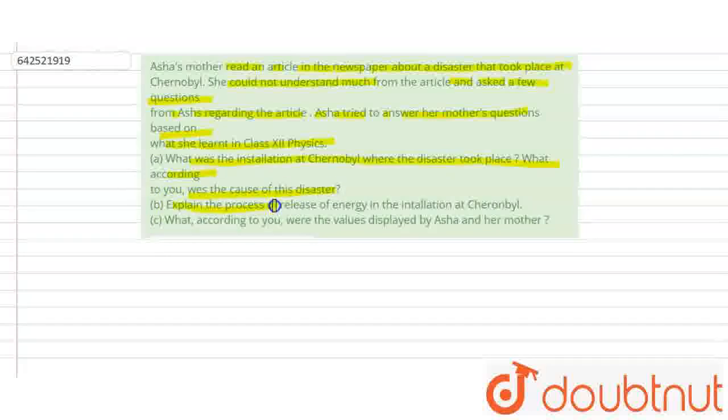Part B is, explain the process of release of energy in the installation at Chernobyl. Part C is, what, according to you, were the values displayed by Asha and her mother?